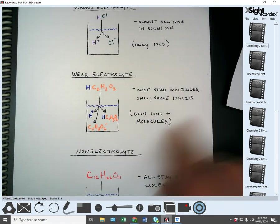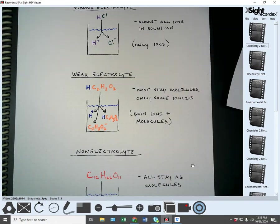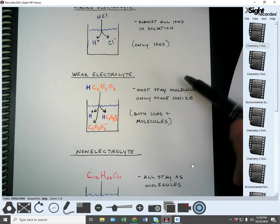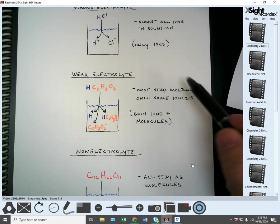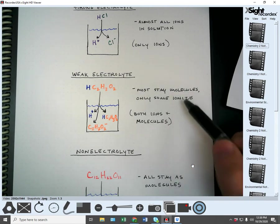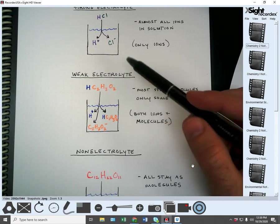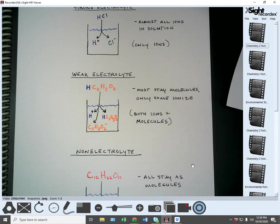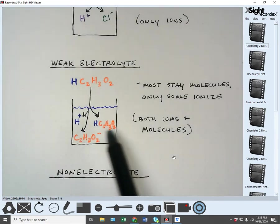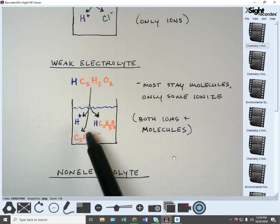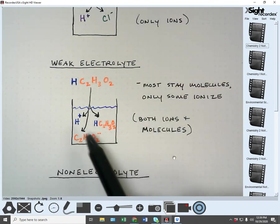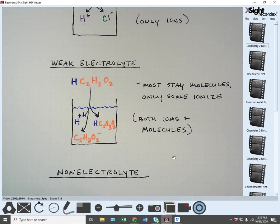I was finishing up talking about the weak electrolytes here. Most of them will stay as molecules, but some will ionize. So when it goes into the solution, like the acetic acid, you'll get some of them breaking up into the ions, but you will get some that stay together as the whole molecule, actually a decent amount of them. So in the solution, you will have all three things. You'll have both the cation, the anion, and the whole molecule in a weak electrolyte.